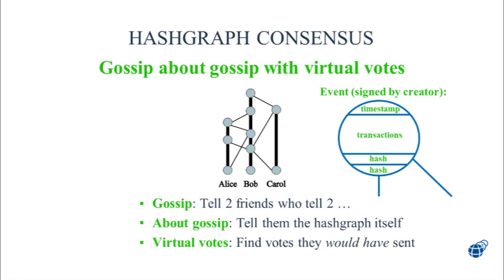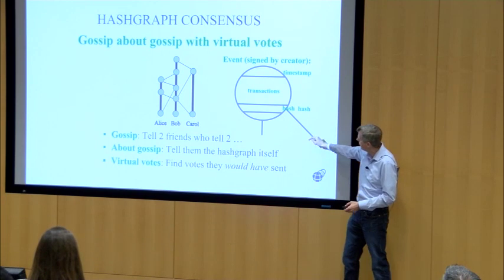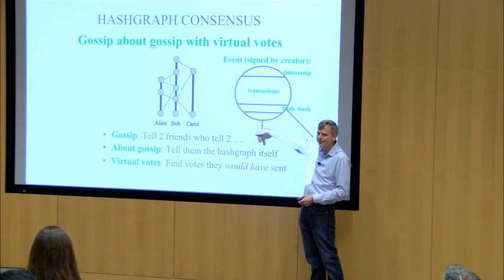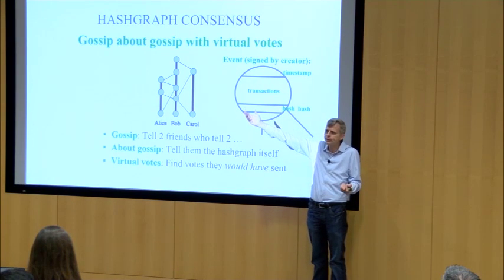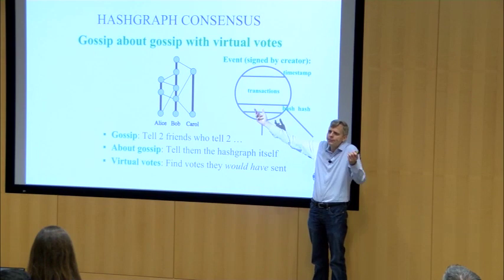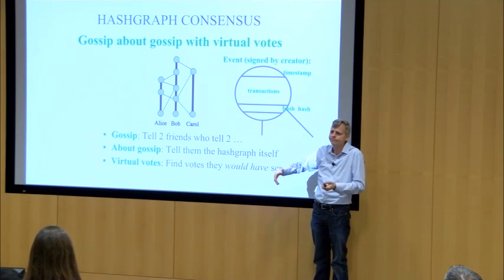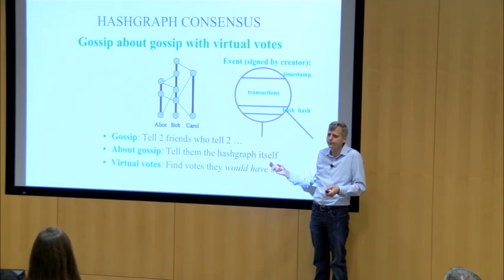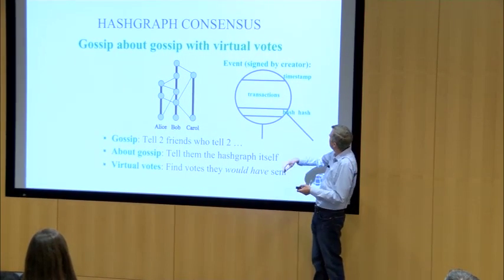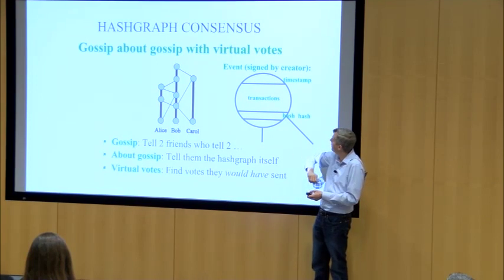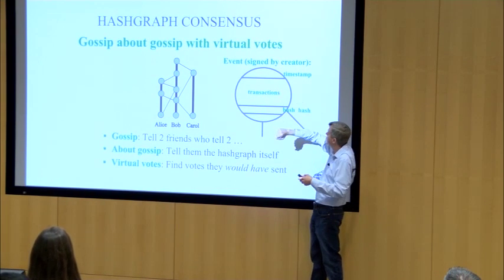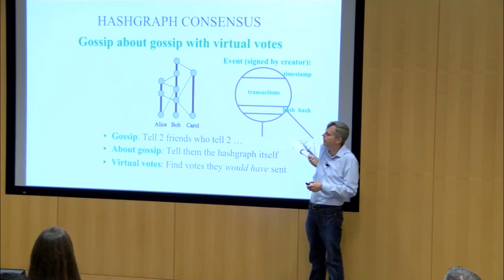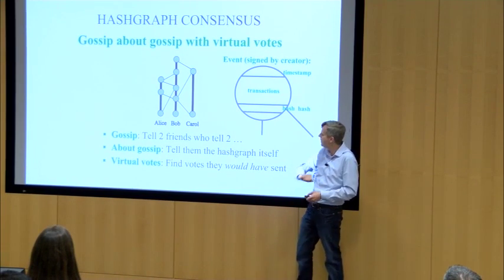What's inside each of these events? An event — one of these circles — has to remember the hash of the event this line goes down to, and the hash of the other event this line goes down to. Those are the two parent hashes. Then you have transactions — that's the whole point of this exercise. When you create an event, if you have transactions to create, just stuff them inside; they come along for the ride as payload. You also need a timestamp and a signature, but you'd have needed those anyway. The top three fields are the bare minimum for any distributed object store. The two parent hashes are the small extra overhead for gossip about gossip to build the hashgraph — and for virtual voting, you send zero additional bytes.